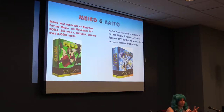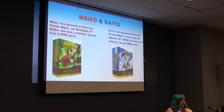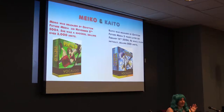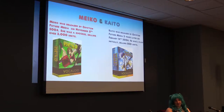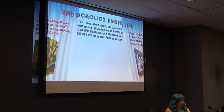These are also considered the V1 Vocaloids. Zero G also released a third Vocaloid named Miriam, and she had kind of an image, but it was a picture of a person — not the cute anime style that Meiko and Kaito had.